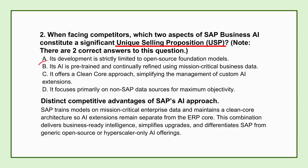No external general-purpose model really has access to that depth of verified transactional knowledge — what we sometimes call the ground truth of business operations. That proprietary data fuels models that are inherently more accurate and reliable for specific enterprise tasks right out of the box. The second differentiator is the clean core approach, which is pretty much non-negotiable for long-term enterprise health. It means you never modify the core S/4HANA code itself.